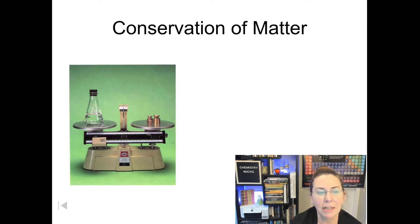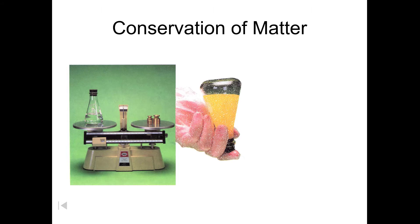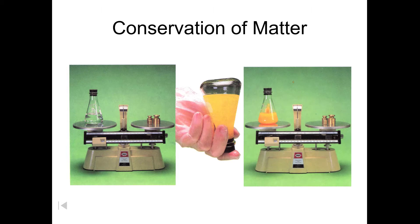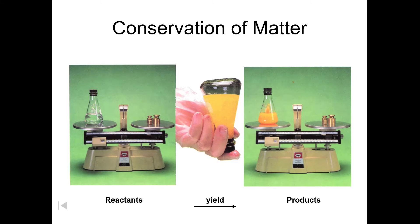Let's look at this in terms of mass. Here we have a reaction — we have two solutions, one in a test tube inside the beaker, the other one in the beaker itself. If we tip the beaker upside down, it allows the two solutions to mix. The mass at the beginning is equal to the mass at the end, so our reactants yield our products and the masses are completely equal. Notice there's a stopper in the flask, and this meant that even if a gas was produced, none was going to escape so we could still account for its mass.